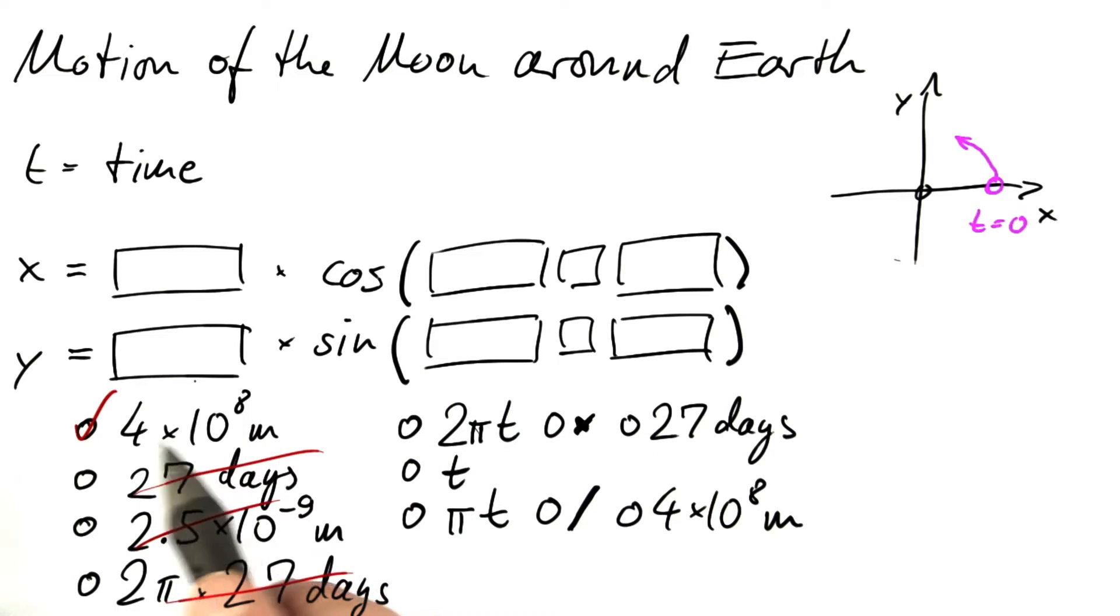This is the radius of the orbit of the Moon around the Earth. Let me do this in reverse order. The radius of the orbit of the Moon should not appear inside here.